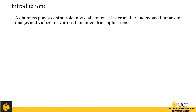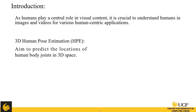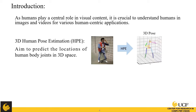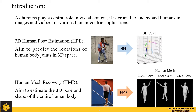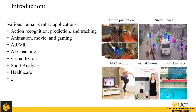As humans play a central role in visual content, it is crucial to understand humans in images and videos for various human-centric applications. 3D human pose estimation, which aims to predict the location of the human body joints in 3D space, and human mesh recovery, which aims to estimate the 3D pose and shape of the entire human body — referred to as HPE and HMR — can be utilized by applications such as action recognition, prediction and tracking, animation, AR, VR, AI coaching, virtual try-on, sport analysis, and healthcare.